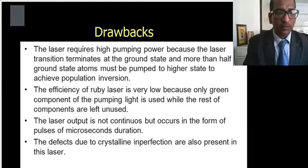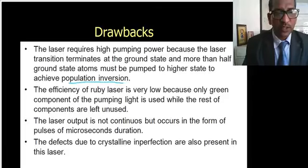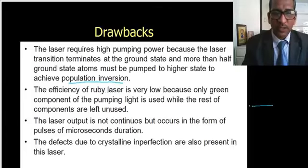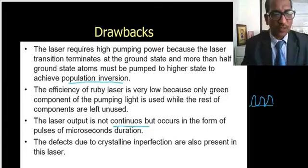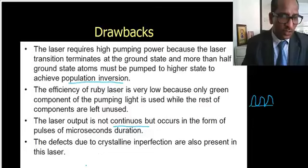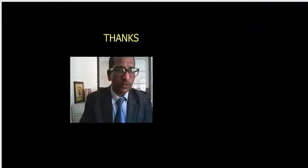Drawbacks: The laser requires high pumping power because the laser transition terminates at ground state and more than half the ground state atoms must be pumped to achieve population inversion. The output is not continuous but occurs in the form of pulses. The defects due to crystalline imperfection are also present in this laser.